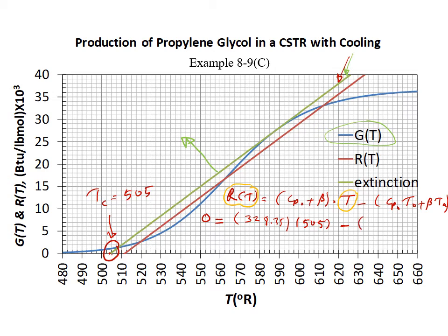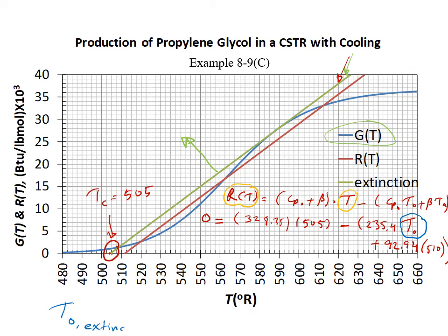The value of CP0 is 235.4, and beta is 92.94. The value of TA is 510°R. Now we have an equation where the only unknown is T0 — the T0 extinction. Solving this equation gives T0 extinction equals 502°R.